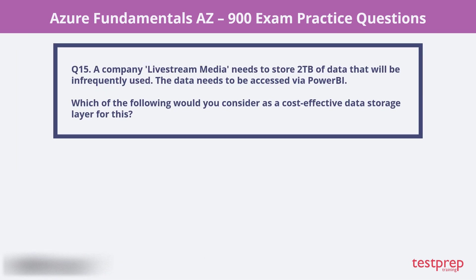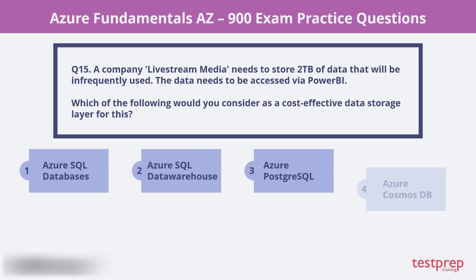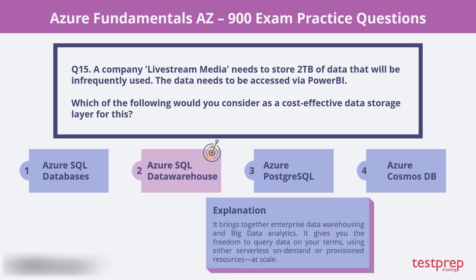Question 15. A company Livestream Media needs to store 2TB of data that will be infrequently used. The data needs to be accessed via Power BI. Which of the following would you consider as a cost-effective data storage layer? Is it Azure SQL Databases, Azure SQL Data Warehouse, Azure PostgreSQL, or Azure Cosmos DB? Azure SQL Data Warehouse would be the correct choice. It brings together enterprise data warehousing and big data analytics, giving you the freedom to query data using either serverless on-demand or provisioned resources, at scale.